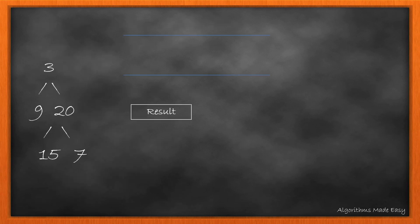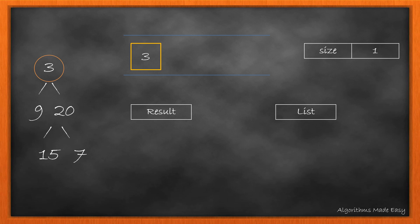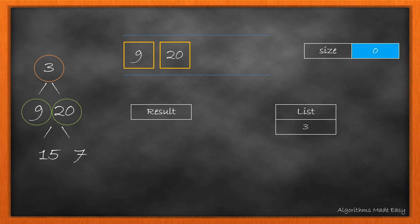Let's check the sample example. We initialize the queue and result list, put the root into the queue, and as the queue is not empty we start our loop. We also initialize a list to hold level values. As size is 1, we loop from 1 to size, remove 3 from the queue, and add both its children into the queue. We decrement size to 0 and add 3 into our list.